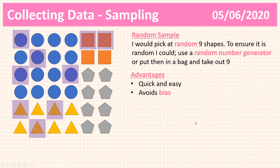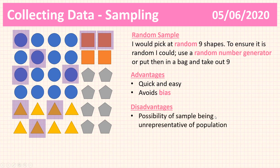The advantages of a random sample are that they are quick and easy, and they avoid bias if we are truly random. However, there are disadvantages. If you look at the shapes I've picked, I haven't picked any pentagons. That's one of the main disadvantages of random sampling — there is a possibility that my sample will be unrepresentative of the entire population. It might be that all the shapes with holes are pentagons, and I'd never know that because I didn't pick any. It's really important that our sample is representative of the population.